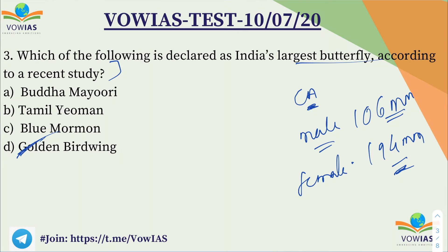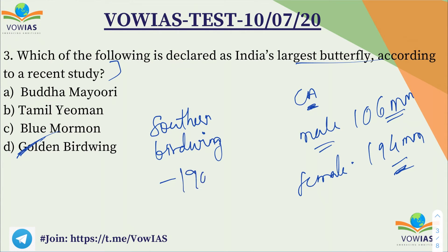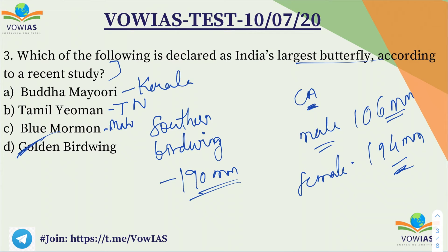Previously, India's biggest butterfly was the Southern Birdwing, with a wingspan of 190 millimeters. Now, Budha Mayuri is the state butterfly of Kerala; the Tamil Yeoman is the state butterfly of Tamil Nadu; and the Blue Mormon is the state butterfly of Maharashtra. This is very crucial information.